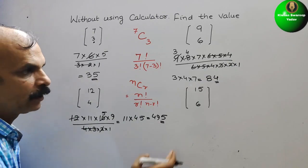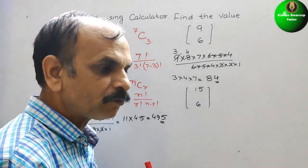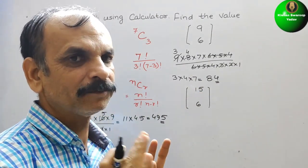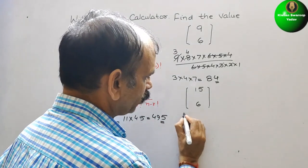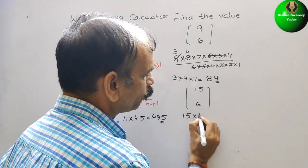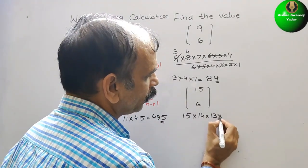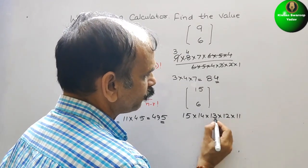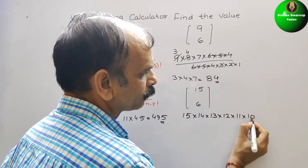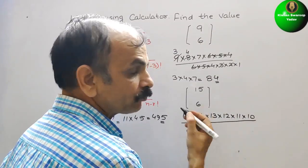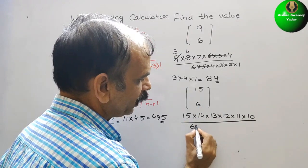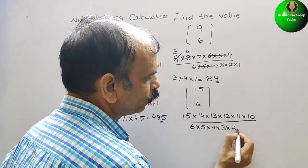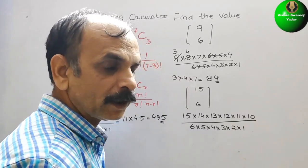Next comes here, 15 and 6. So that means 15 factorial we have to write up to 6 only, 6 digit, starting with 15. So here comes 15 into 14 into 13 into 12 into 11. This is 5, 6, 7 and one more is 10. By 6 factorial. So 6 factorial is 6 into 5 into 4 into 3 into 2 into 1. Just reduce them.